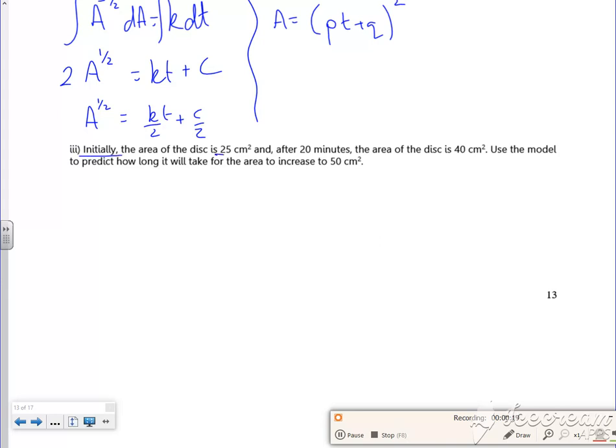So what does it say? It says initially the area of the disc is 25. So I know that when t is 0, A is 25. Let's use that information. So 25 equals q squared. So what have I got for that one? So q must be 5.